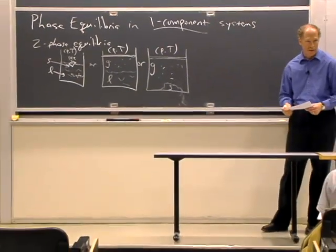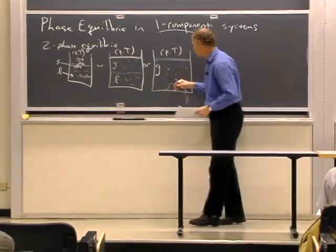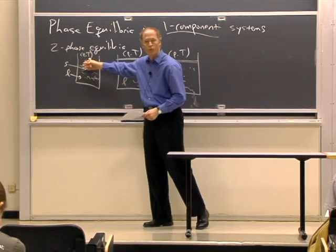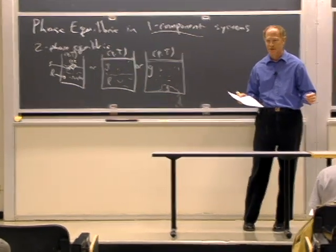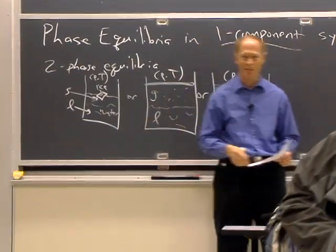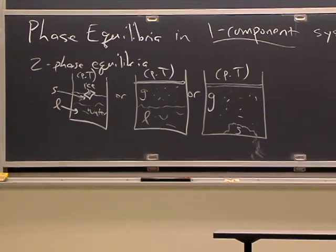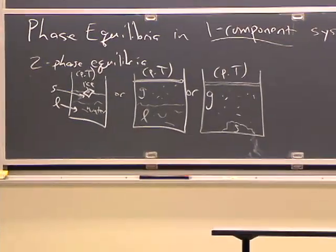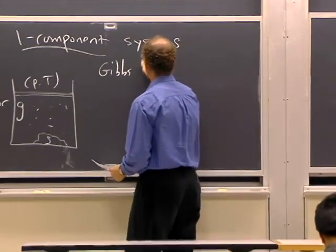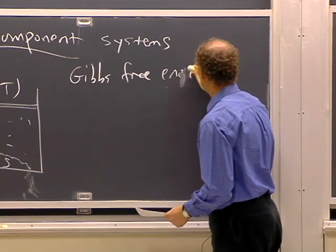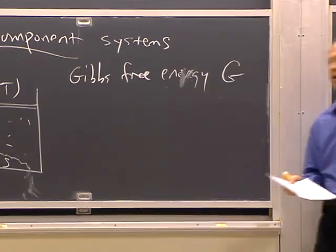To start, what quantity are we going to need to look at to tell whether the different phases are in equilibrium, or if they're not, in which direction things will go? Are things going to change so that ice will melt, or so that the water will freeze? What quantity is going to tell us about all that? The Gibbs free energy is going to tell us everything. And we're going to frame the discussion in terms of the chemical potential — that is, the Gibbs free energy per mole.